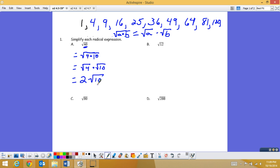Doing the same thing with 12, the perfect square that goes into 12 evenly is 4 once again. And 12 is 4 times 3. So that's going to be equal to square root of 4 times the square root of 3. And once again, the square root of 4 is 2. So that's 2 square root of 3.